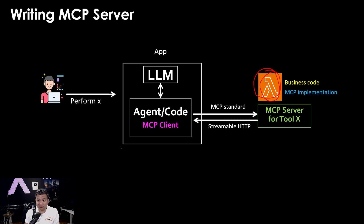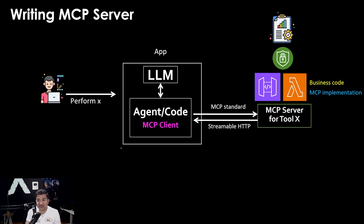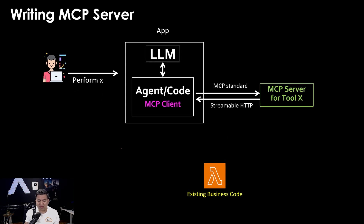One example is using a library called FastMCP — you import this library in your code and it creates all those MCP functions. But once you have the Lambda, you also have to expose it using something like a load balancer or API Gateway, and you need to implement authentication, authorization, monitoring, and logging. So it's a lot of extra overhead, especially when you already have a bunch of existing business code across many teams and all you want is to connect them using the MCP standard.